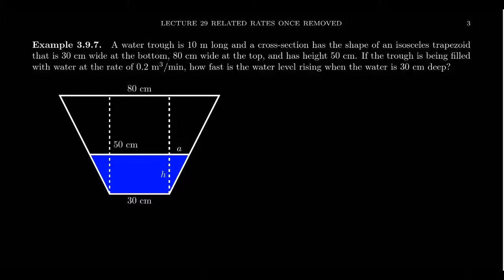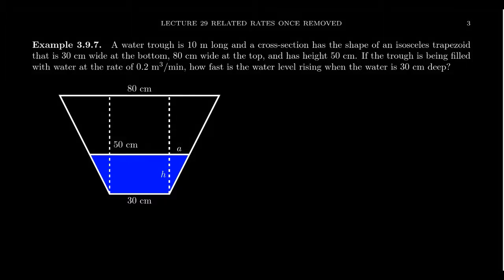A water trough is 10 meters long and a cross section has the shape of an isosceles trapezoid that is 30 centimeters wide at the bottom, 80 centimeters wide at the top, and has a height of 50 centimeters. If the trough is being filled with water at a rate of 0.2 cubic meters per minute, how fast is the water level rising when the water is 30 centimeters deep?